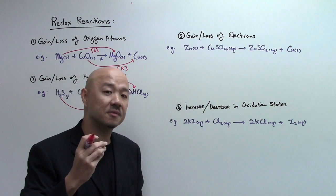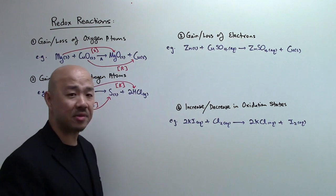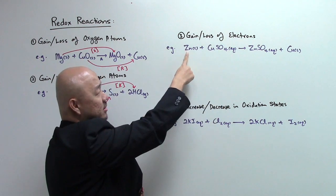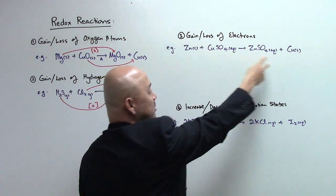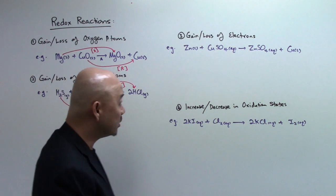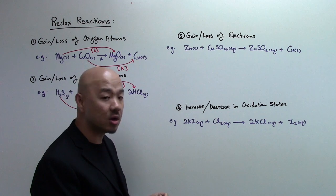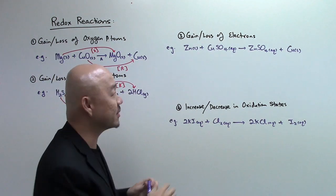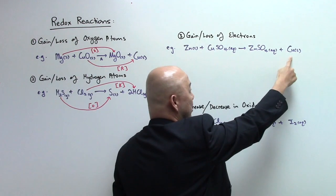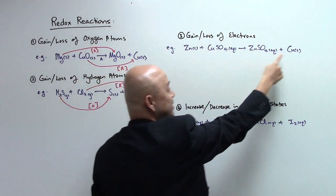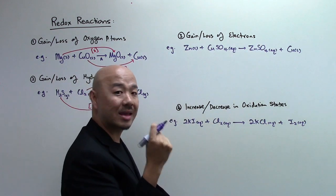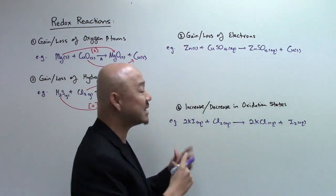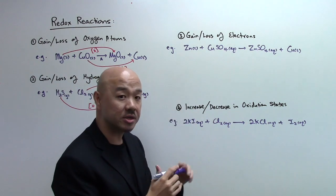Method 3 is through the gain or loss of electrons. This is a metal displacement reaction: zinc displaces copper out from copper sulfate solution to form zinc sulfate solution and copper. In order to work out whether this reaction is redox — meaning whether a substance has been oxidized and another reduced — you need to do a few steps. First, make sure the equation is balanced and you have the correct state symbols. Then get the ionic equation by cancelling the spectator ions — ions that do not take part in the reaction. In this case the spectator ions are the sulfate ions.